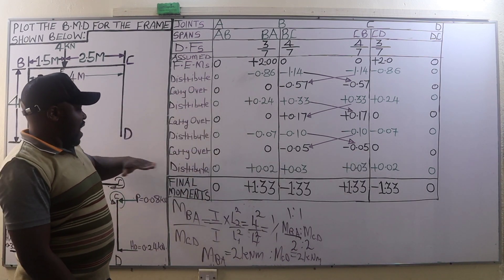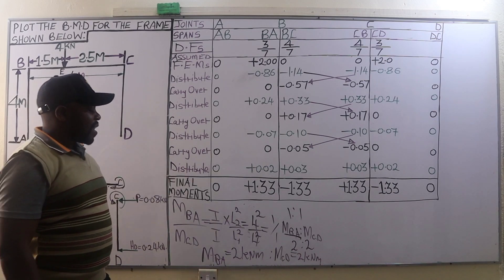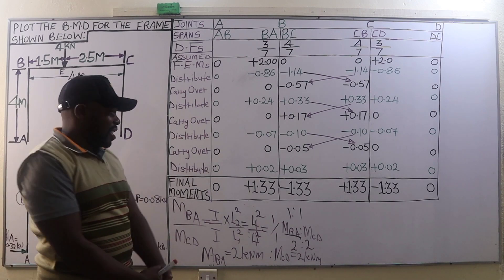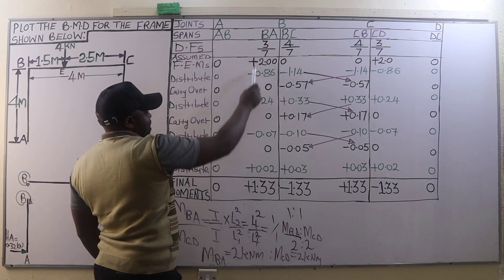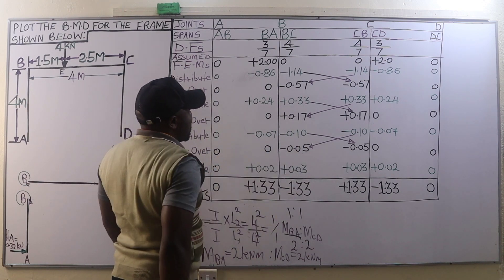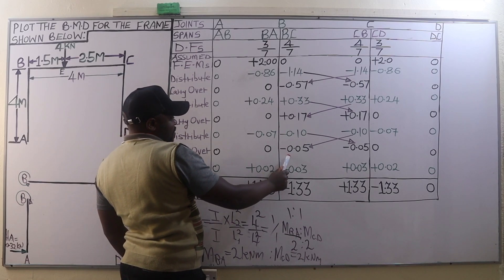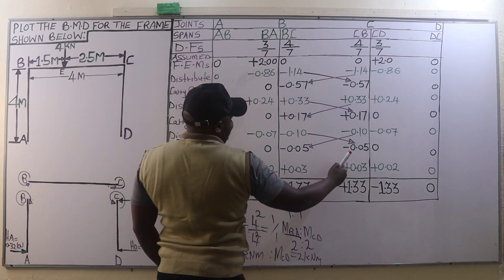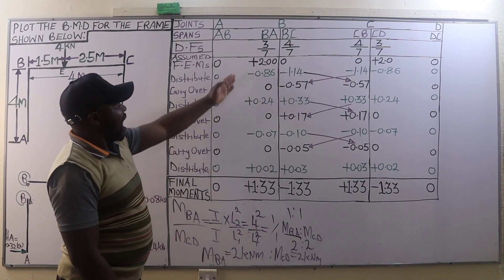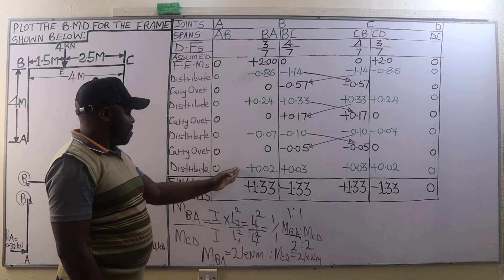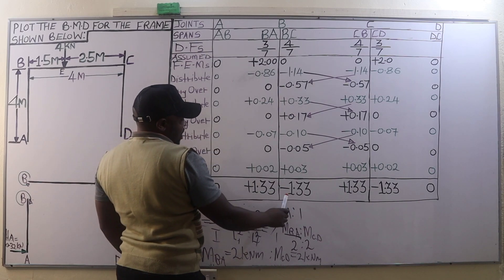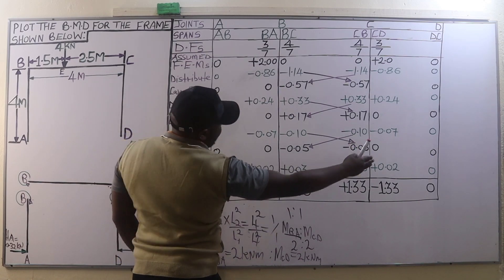Carry over half of negative 0.10 from joint C to joint B giving negative 0.05, and from joint B to joint C also negative 0.05. Finally, for the last distribution: excess moment on joint B is positive 0.05, distributed on member BA as 3/7 × 0.05 = positive 0.02, and on member BC as 4/7. Adding all moments from the fixed end moments through to the last distribution, the final moments are: member BA positive 1.33 kNm, member BC negative 1.33 kNm, and the same magnitudes on members CB and CD.